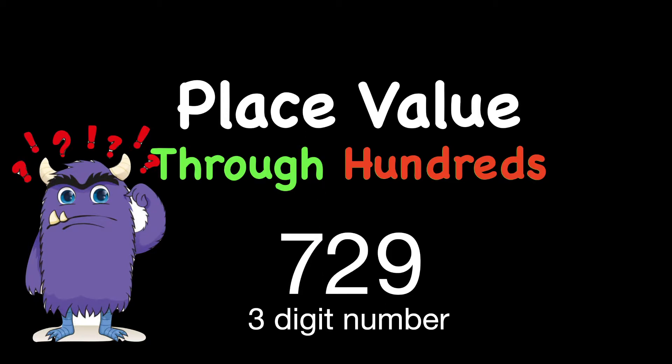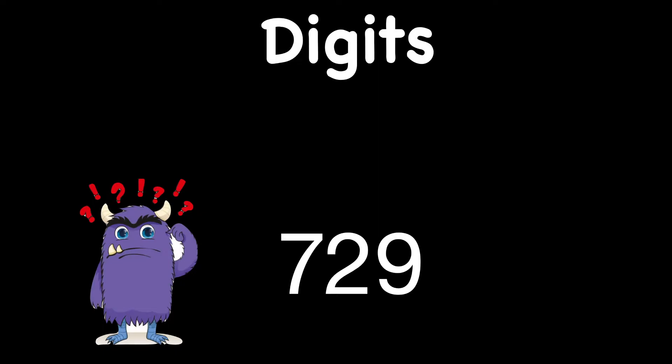Digits just means numbers, and all the numbers that we have, whether it's large or small, are made up of something called digits that you see in yellow on the screen. Zero, one, two, three, four, five, six, seven, eight, nine are called digits, and all numbers are made up of those digits.